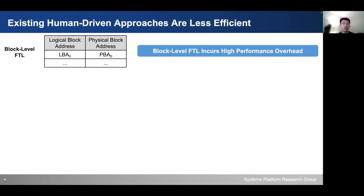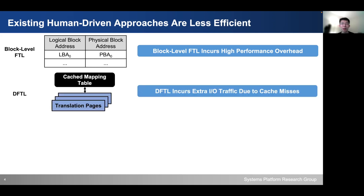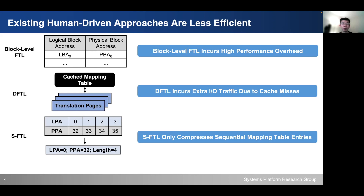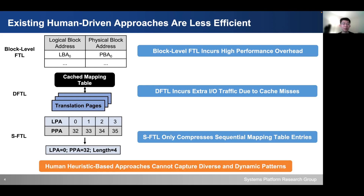There exist many human-driven approaches to solve this problem. Block-level FTL maintains the mapping table at the flash block level, but this can incur high garbage collection overhead by merging multiple flash blocks to align the page offset. DFTL caches part of the mapping table entries in DRAM, but may incur extra IO traffic due to cache misses. SFTL performs compression on sequential mapping table entries. But all these human heuristic-based approaches cannot capture diverse and dynamic mapping patterns.